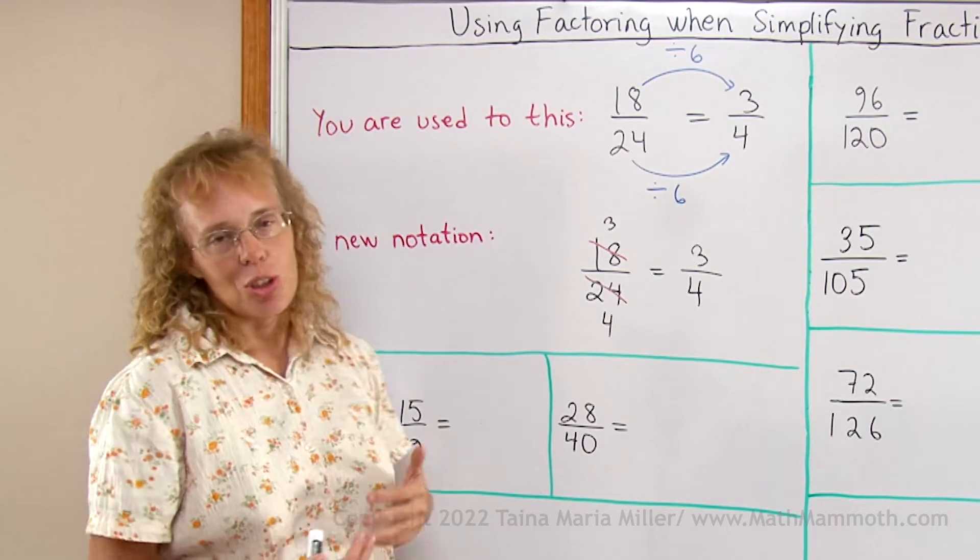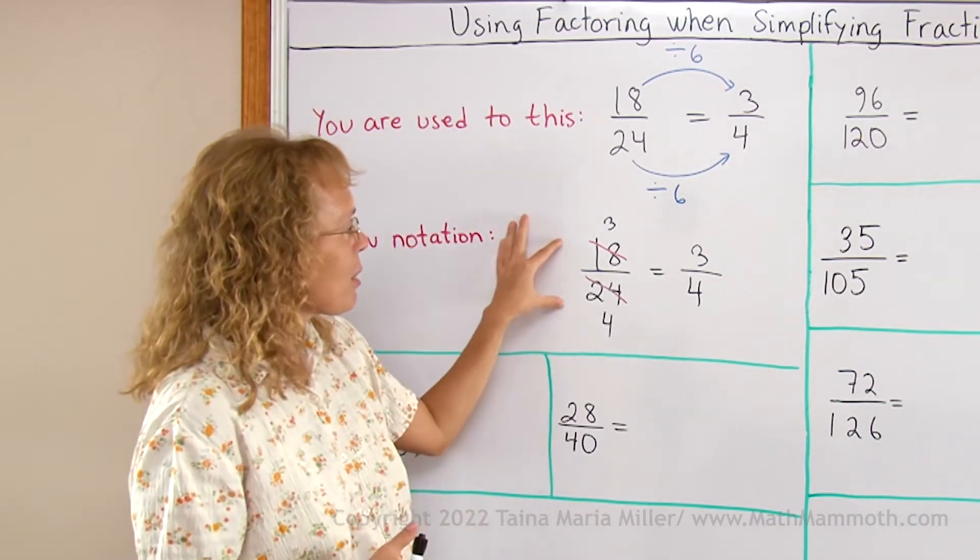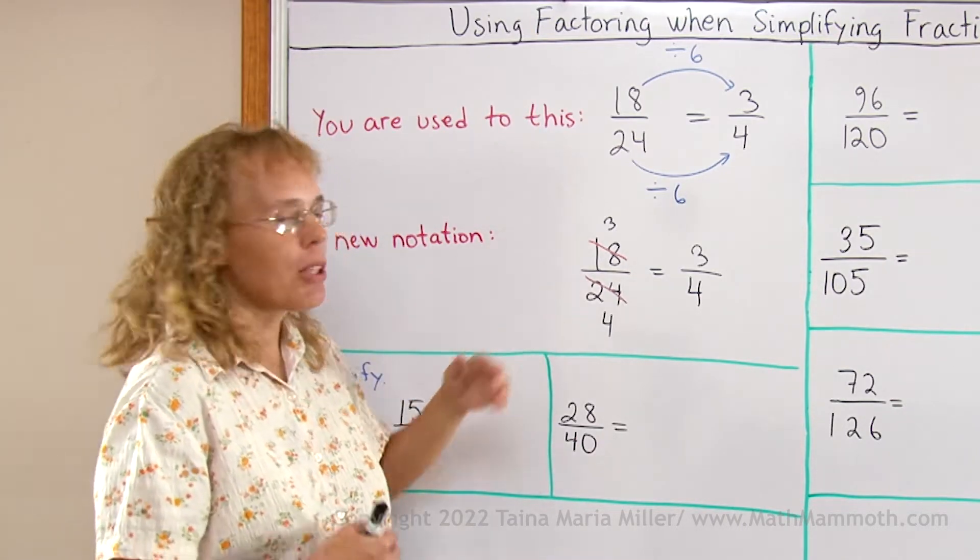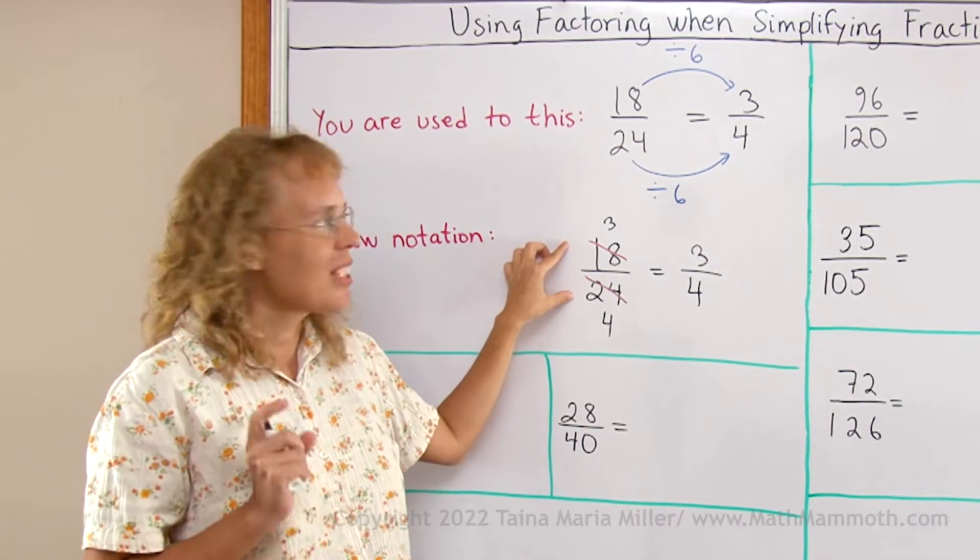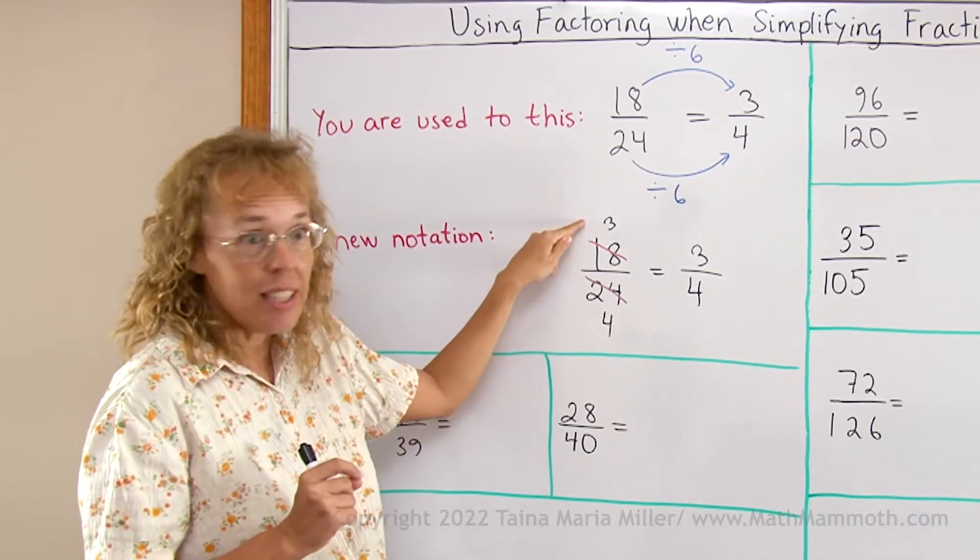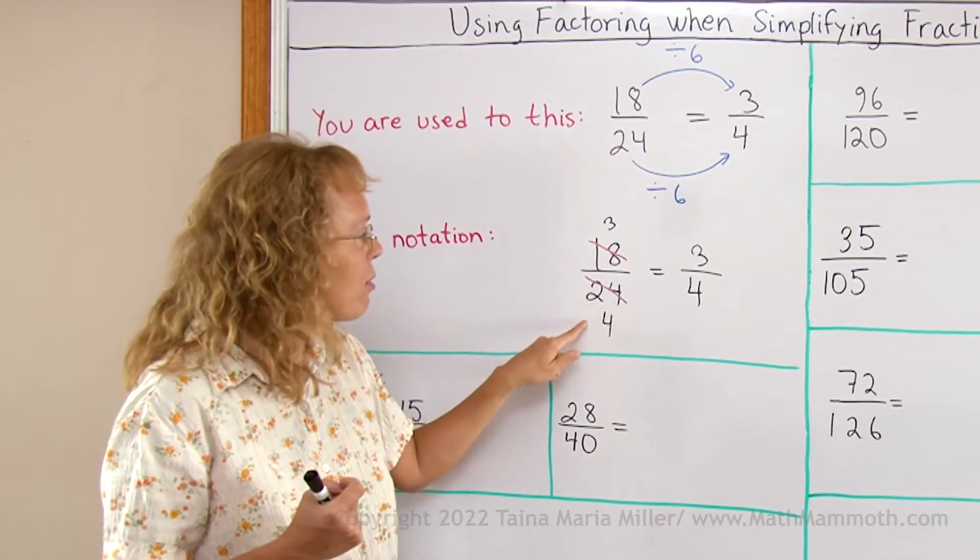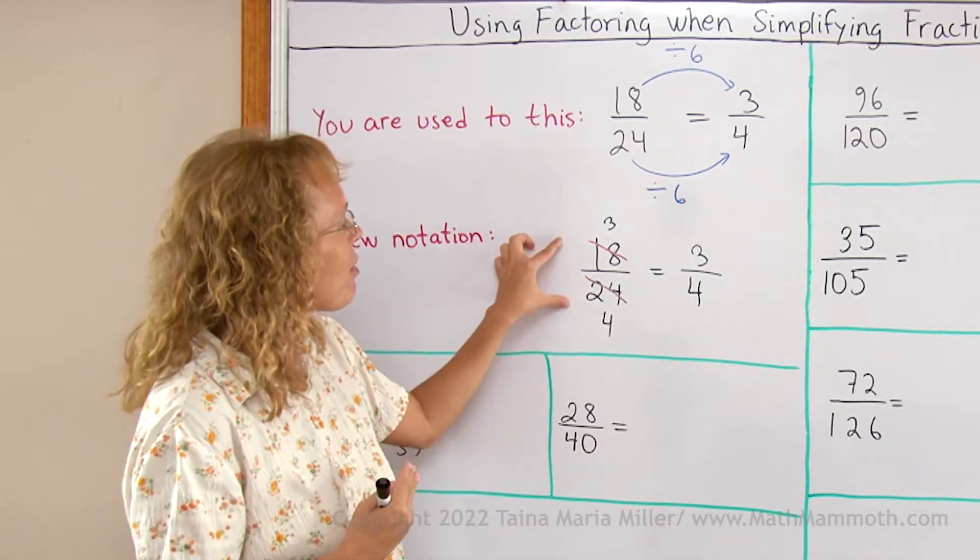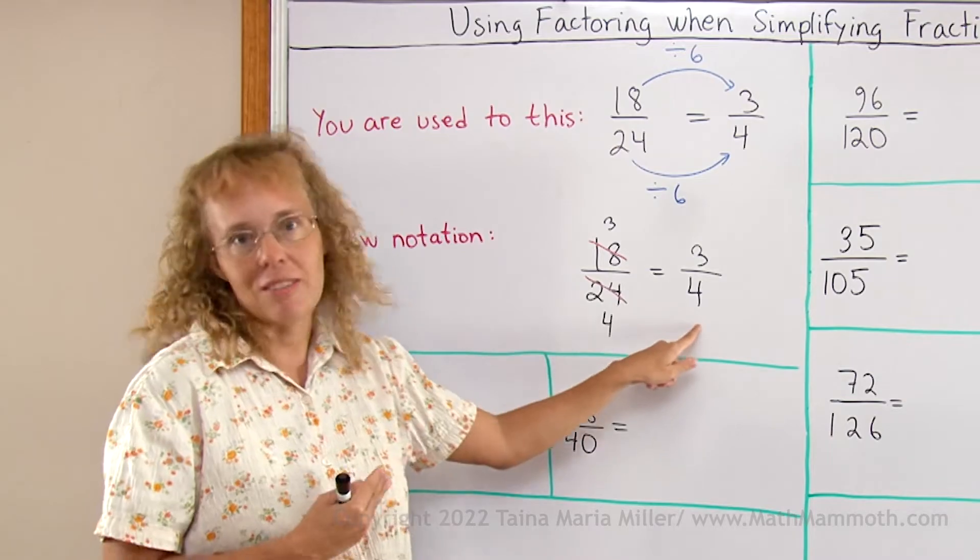Now we're going to use a new type of notation commonly used in algebra and onwards. When we're simplifying, we cross out the numbers 18 and 24 because we're going to divide them both by 6. We're not going to show the 6 anywhere, but we divide 18 by 6 and get 3 and replace the 18 by 3, and then 24 gets replaced by 4. The number 6 is not shown anywhere; it's just in your mind that you divided both of them by 6.